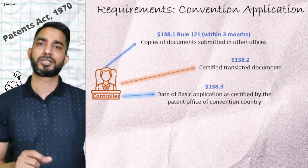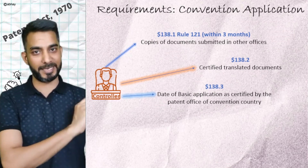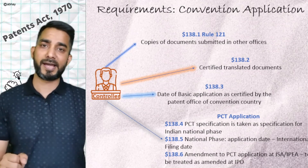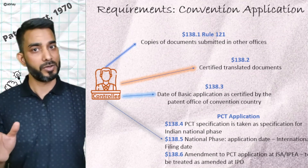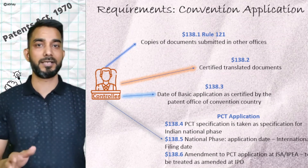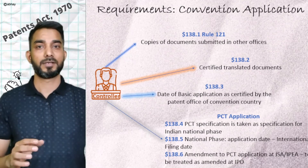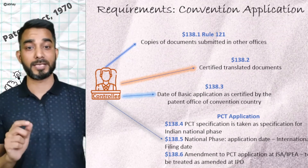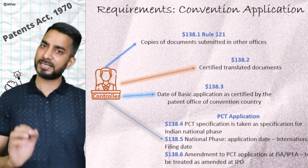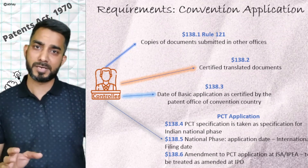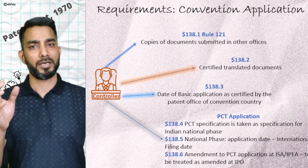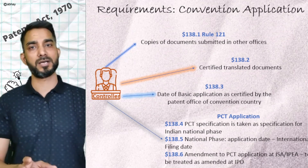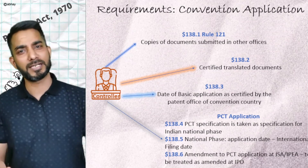Section 138 also provides details regarding PCT national phase applications. As per Section 138.4, the specification or any other document filed with the PCT international application will be treated as the specification for the Indian national phase application as well. As per Section 138.5, the application date of the Indian national phase application will be the international filing date of the PCT application. Section 138.6 states that any amendments to the PCT application made before the International Search Authority or International Examination Authority will be treated as if the amendments were made before the Indian office.